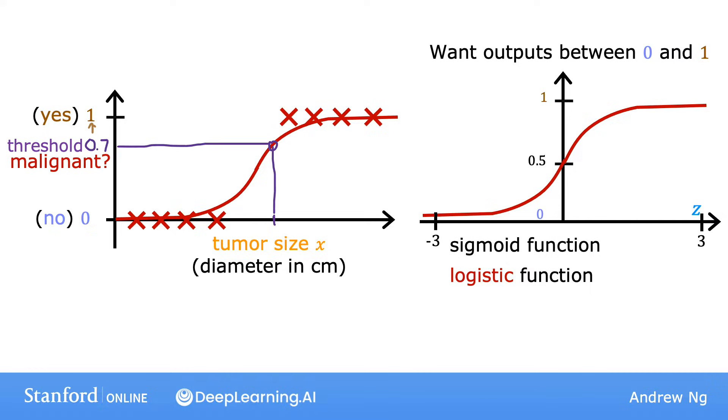The sigmoid function looks like this. Notice that the x-axis of the graphs on the left and right are different. In the graph to the left, on the x-axis is the tumor size, so it's all positive numbers. Whereas in the graph on the right, you have 0 down here, and the horizontal axis takes on both negative and positive values, and I've labeled the horizontal axis z. And I'm showing here just a range of negative 3 to plus 3.